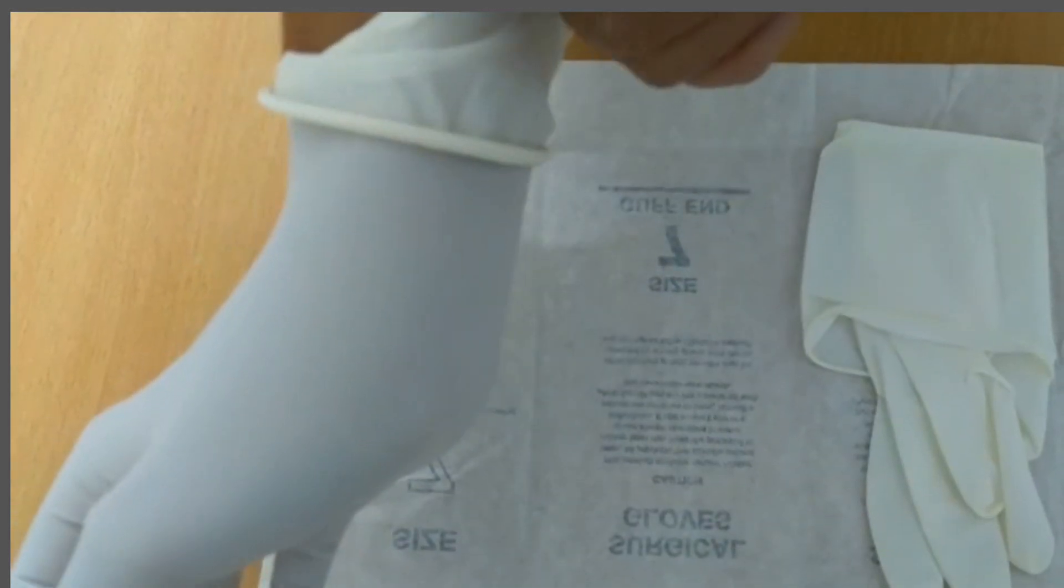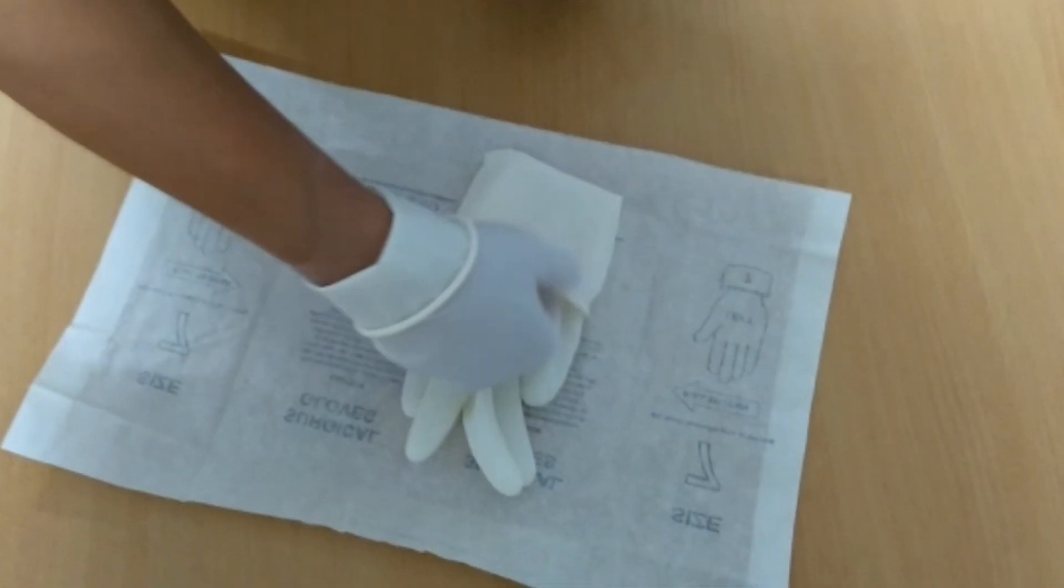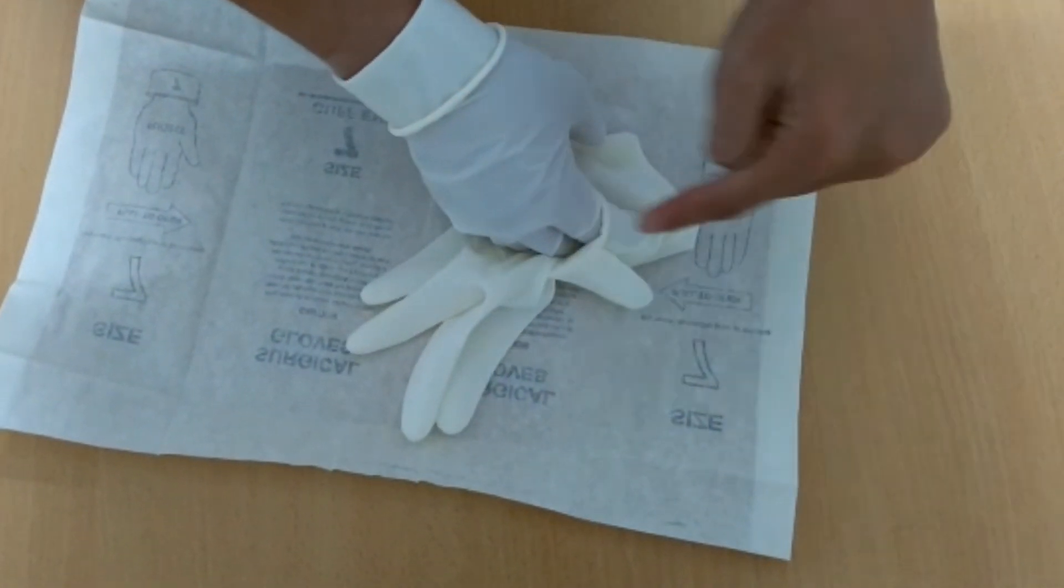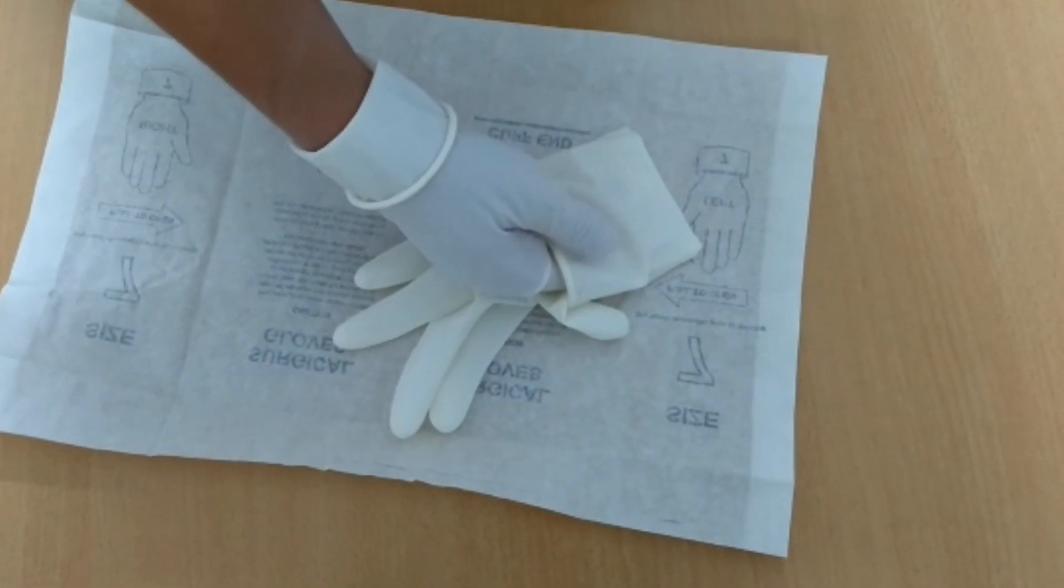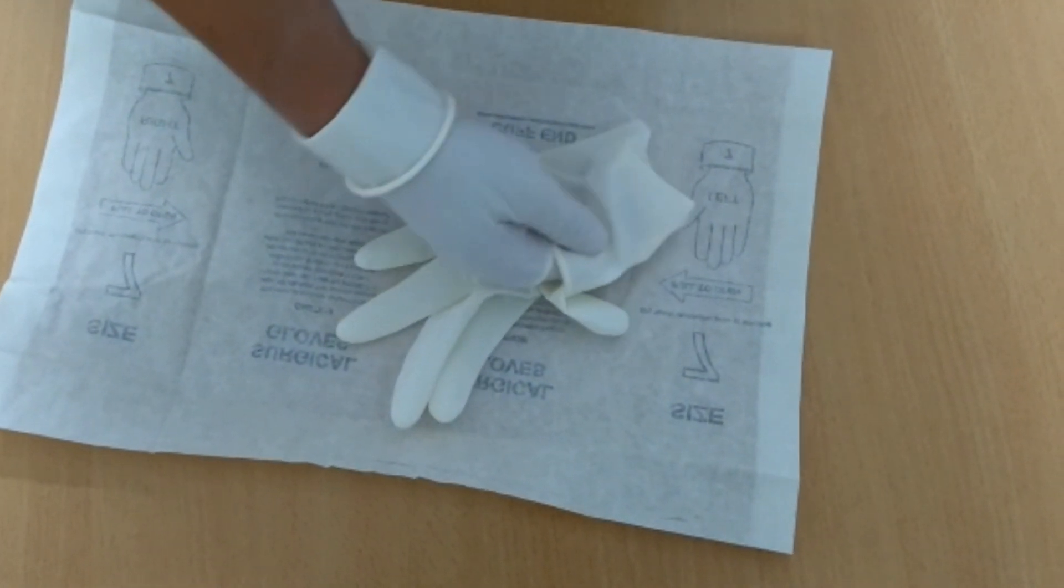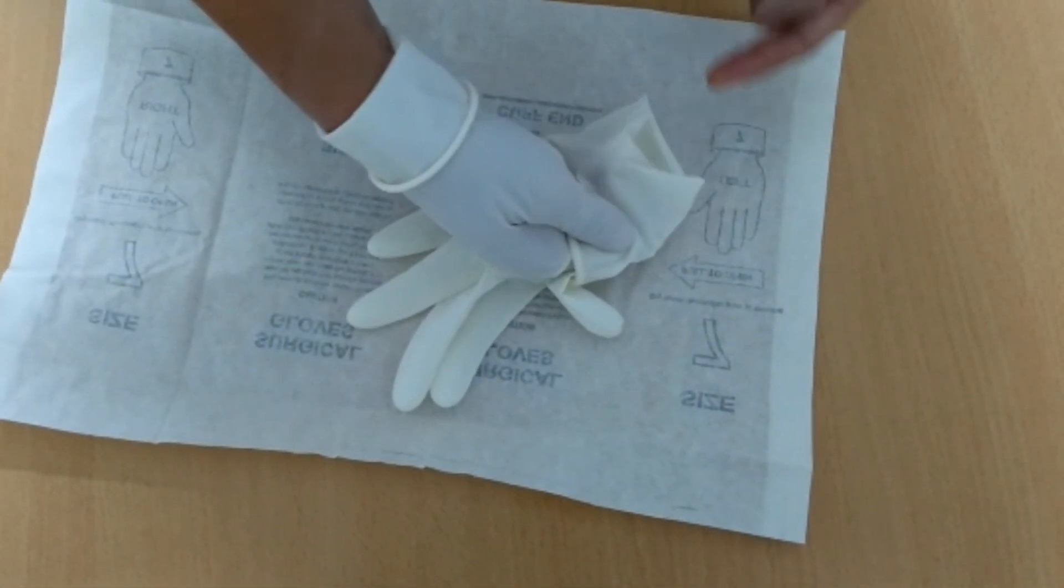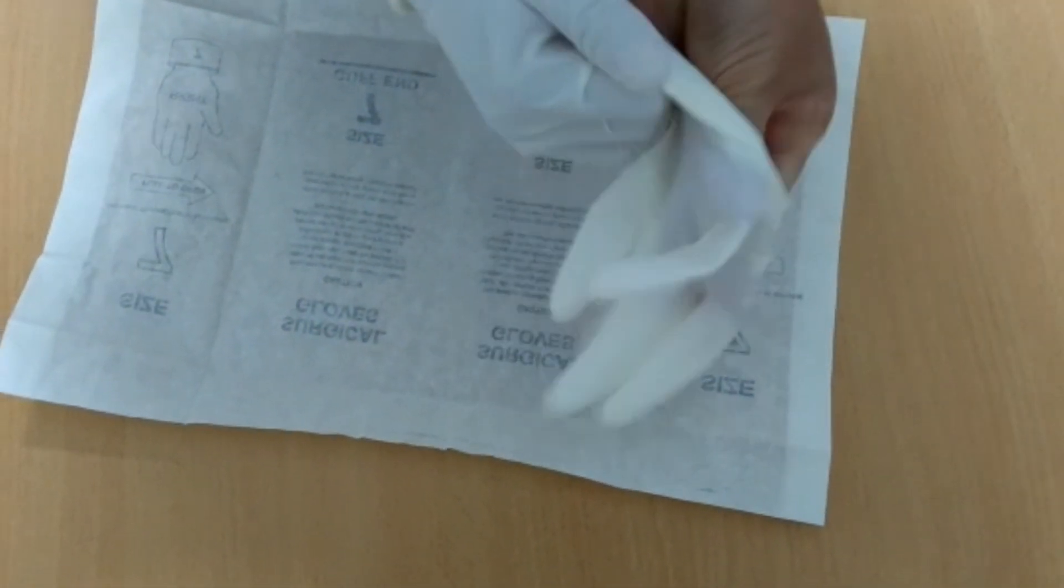Slide the sterile fingers of your sterile gloved hand under the roll cuff of the other sterile glove. Make sure your ungloved hand does not touch the outside of the glove. Slide your ungloved hand into the glove.